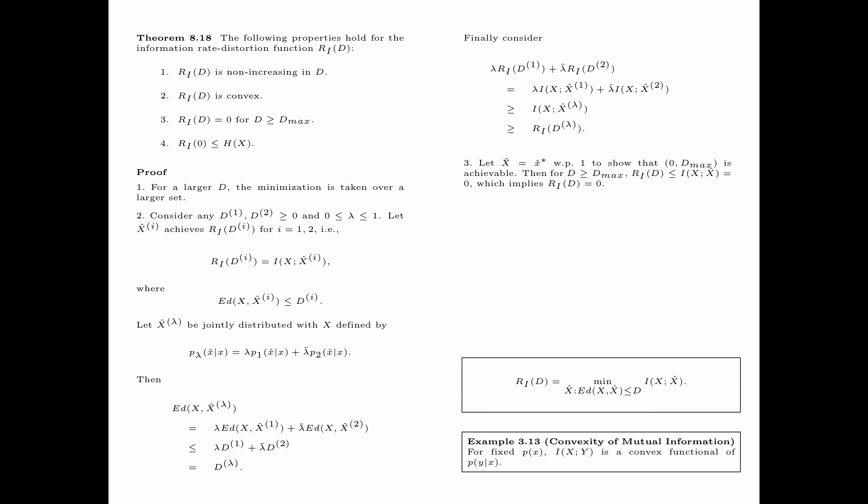To prove property 3, we let x-hat be x-hat*, the best possible constant estimate of the source variable x with probability 1. With this choice, the mutual information between x and x-hat equals 0 and the expected distortion between x and x-hat equals d_max. Therefore, the pair (0, d_max) is achievable. For d greater than or equal to d_max, R_I(d) is less than or equal to I(x; x-hat) which equals 0. Since R_I(d) is a mutual information it is non-negative, and therefore R_I(d) equals 0. This proves property 3.